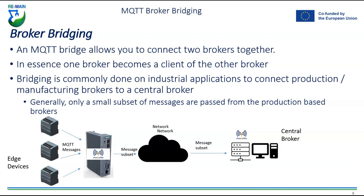Broker bridging allows this by making one broker a client of the other. You set up rules within the client broker to determine which data gets passed through. This is commonly done in industrial applications to connect production and manufacturing brokers to a central broker, allowing you to partition your network — with various brokers in charge of various parts, whether related to production lines or production assets.